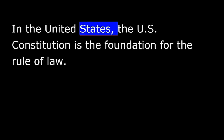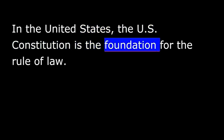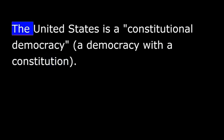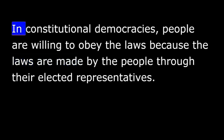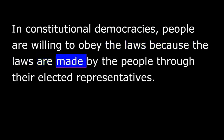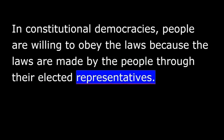In the United States, the U.S. Constitution is the foundation for the rule of law. The United States is a constitutional democracy — a democracy with a constitution. In constitutional democracies, people are willing to obey the laws because the laws are made by the people through their elected representatives. If all people are governed by the same laws, the individual rights and liberties of each person are better protected. The rule of law helps to make sure that government protects all people equally and does not violate the rights of certain people.